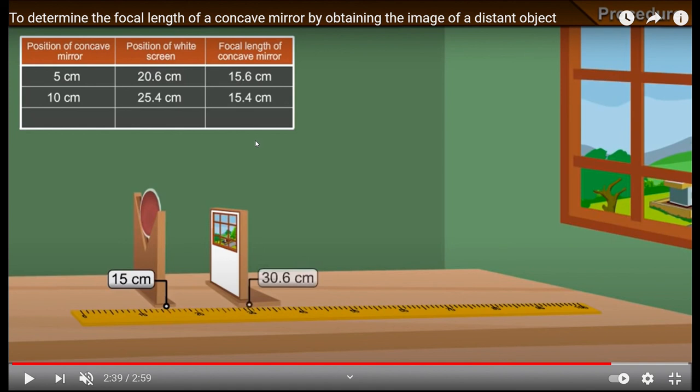We'll take the mean of these three. Three focal lengths we have. We will take the average of these three. So that will be our answer. So this is how we are to calculate the rough focal length in case of concave mirror. I hope you have understood.